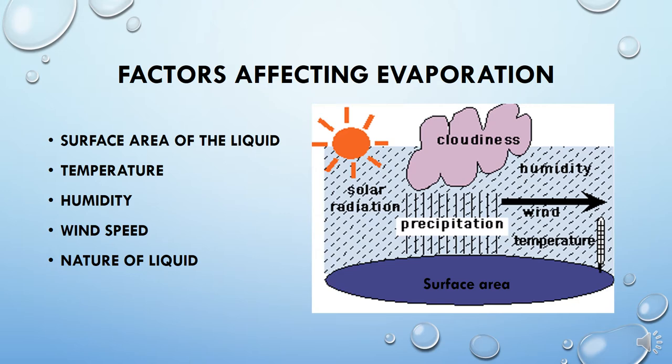Since evaporation is a surface phenomenon, it only takes place through the surface. There are several factors that affect evaporation. Since it is a surface phenomenon, the surface area of the liquid is a very important factor. Other factors are: temperature, humidity, wind speed, and the nature of the liquid. Let us discuss them one by one.